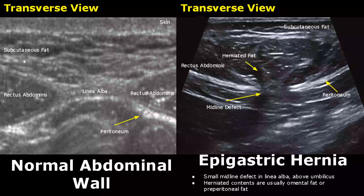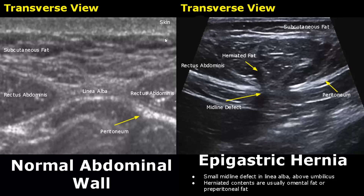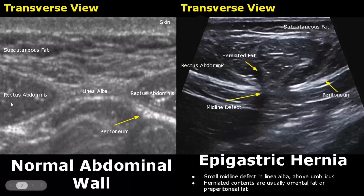Hello everyone, this is Dr. Sam and this video is about hernia ultrasound. The left image shows a normal anterior abdominal wall in transverse view at the epigastric region. A high frequency linear transducer is used to scan the abdominal wall because we only need to see the superficial structures. The topmost layer is the skin, below which is the subcutaneous fat layer — it is slightly hypoechoic. The two hypoechoic structures are the rectus abdominis muscles, and between them is the linea alba. This hyperechoic band is the peritoneum.